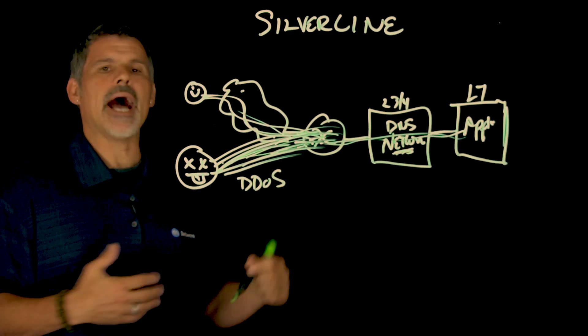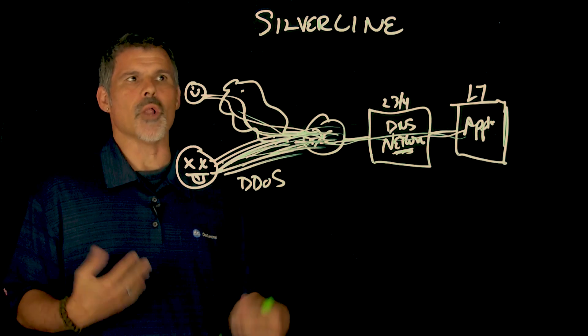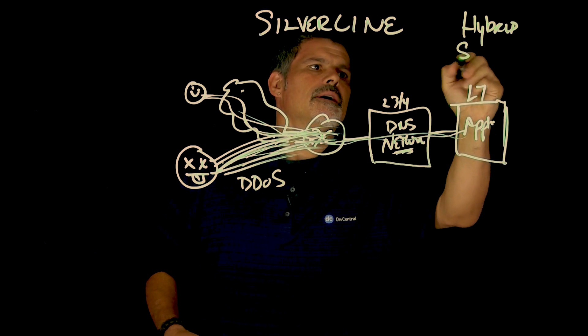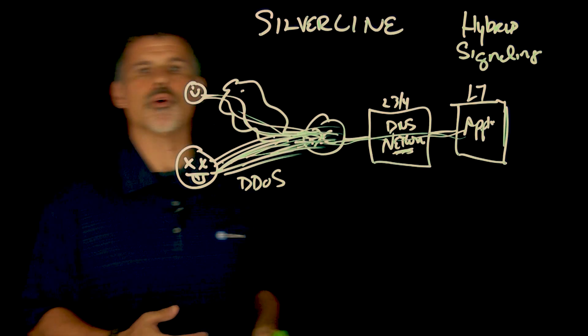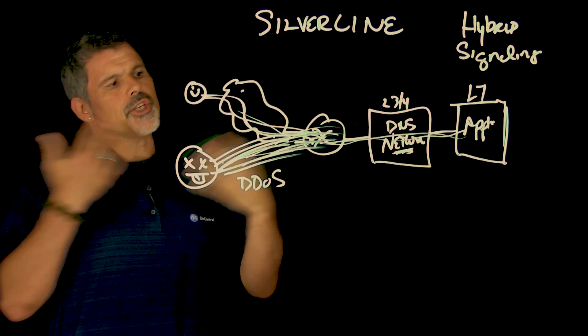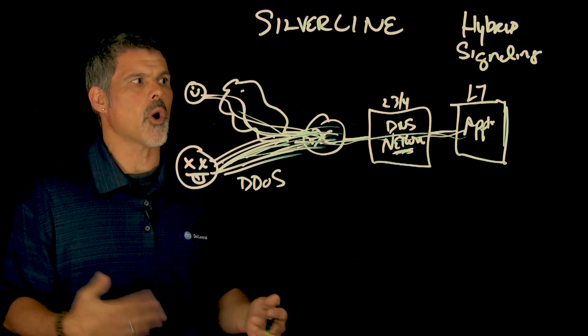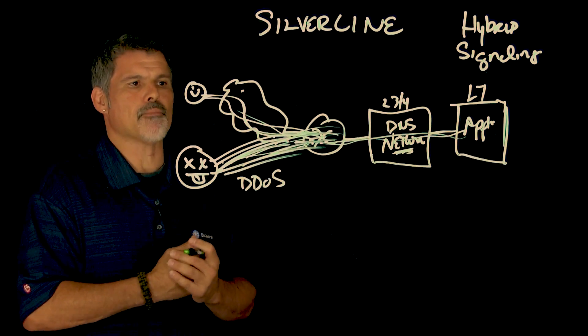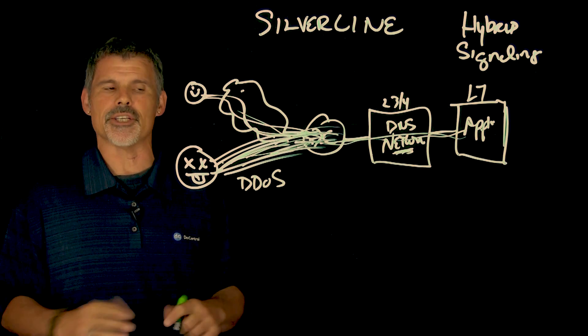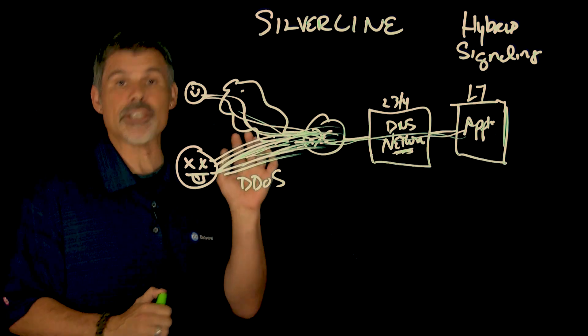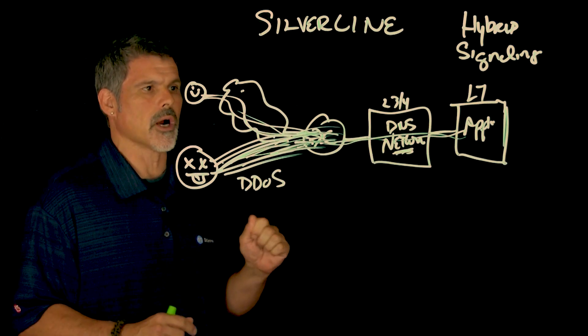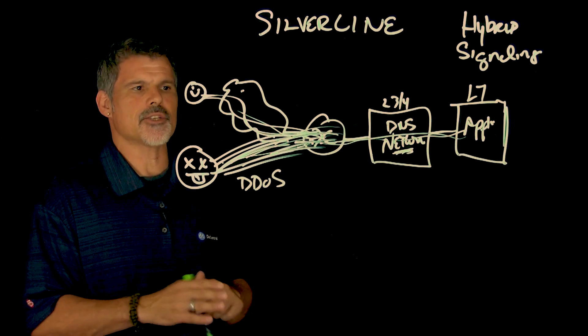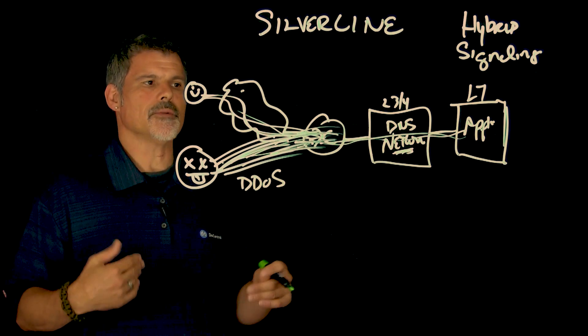But with Silverline's hybrid signaling, now this is pretty cool. Hybrid signaling is actually an iApp. Let me write it over here. Hybrid signaling. So it's an iApp that you can download. And what you do is you load this iApp either on your BIG-IP or the DDoS hybrid defender. And once you have this iApp running, it actually opens up some advanced configurations and allows you to configure certain thresholds, whether it be volumetric thresholds or bad actor type thresholds or certain types of things to then trigger a signal.